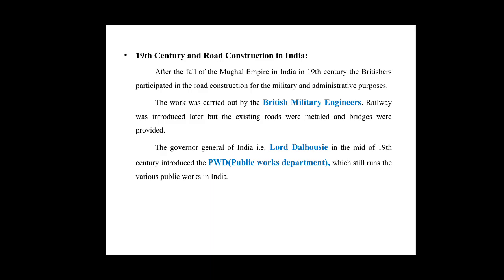In the 19th century, after the fall of the Mughal Empire in India, the British participated in road construction for military and administrative purposes. The work was carried out by British military engineers, and railway was also introduced, but existing roads were metalled and bridges were provided. Lord Dalhousie, the Governor General of India in the mid-19th century, introduced the Public Works Department, which still runs various public works in India.